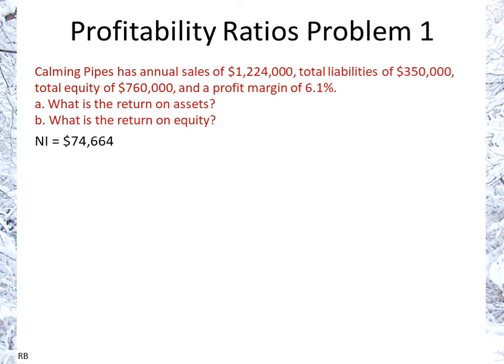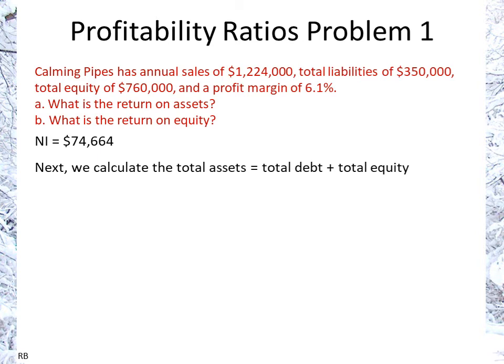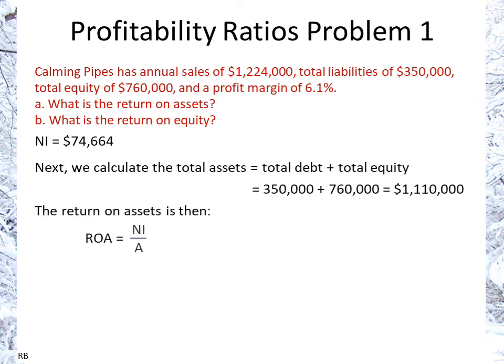Using the net income we just calculated, we figure out the total assets, which is the total debt plus total equity. Keep in mind that total debt is total liabilities for the purposes of these ratios. So our total assets become $1.11 million. Now we can calculate our return on assets, which is the net income divided by $1.11 million — so 6.73%.